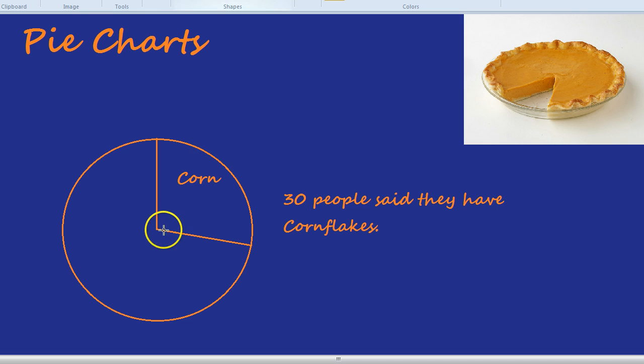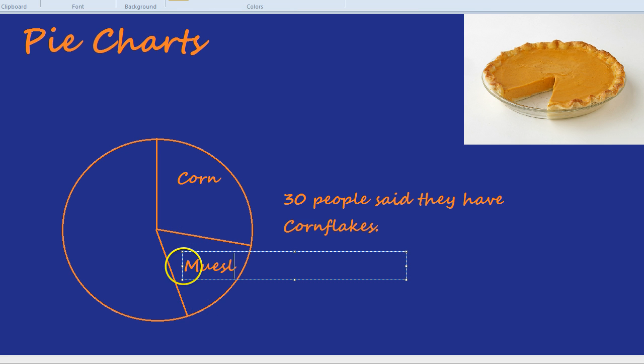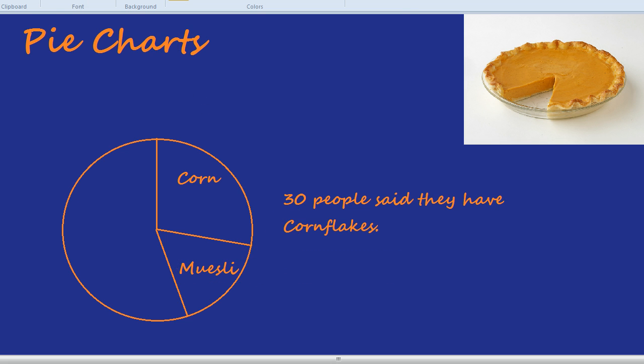Another group of people, and we're not told how many, we have to find out, liked muesli. I would be in that group, not that you care really. But here's the thing, we're given the angles. So we're told this angle here is 100 degrees, it's labeled as 100 degrees, and this angle here is labeled as 60 degrees.